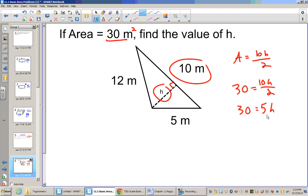Now we divide by 5 on both sides, and our little h is 6. So the height of this triangle is 6 meters long.